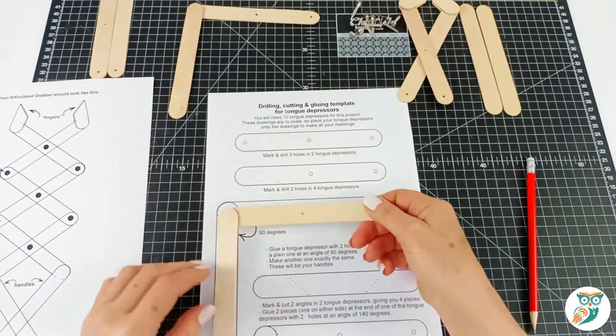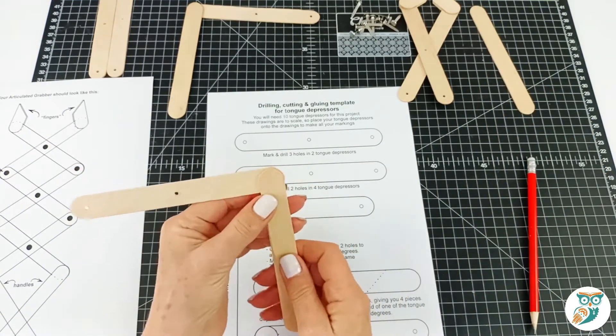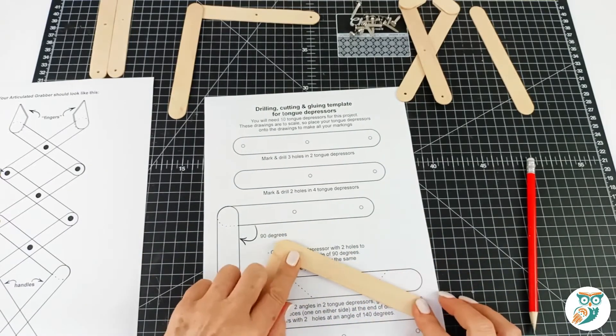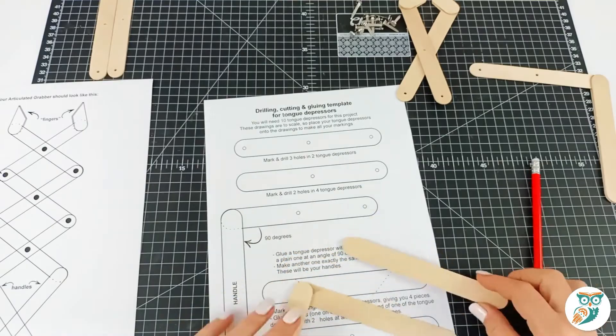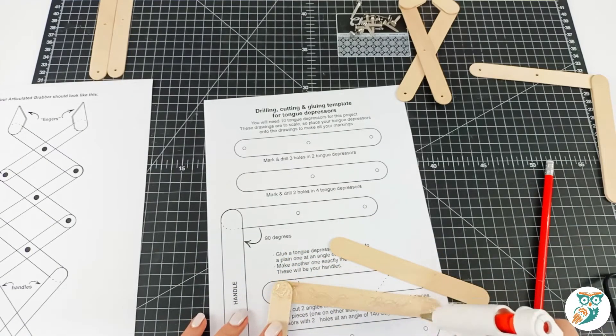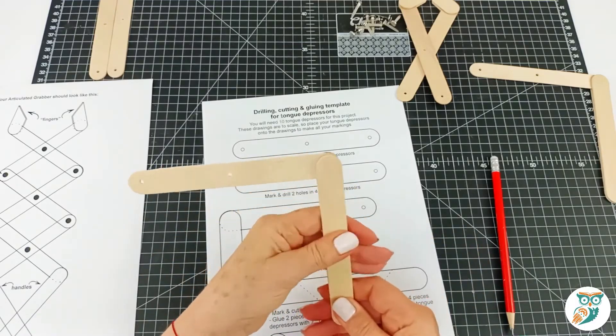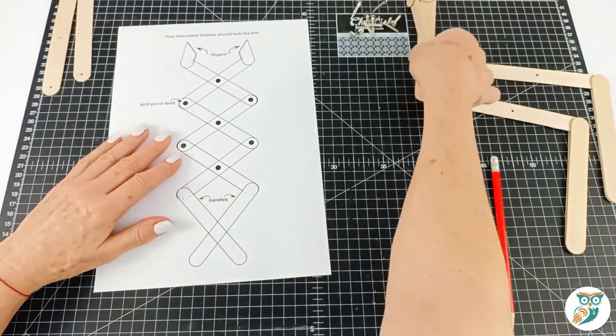So there we go. We glue one side and then we're going to flip over and we're going to add another one on the other side. There we go. And those are our handle pieces. So now we've made the handles and we've made our finger ends. It's time to start putting together the middle piece.